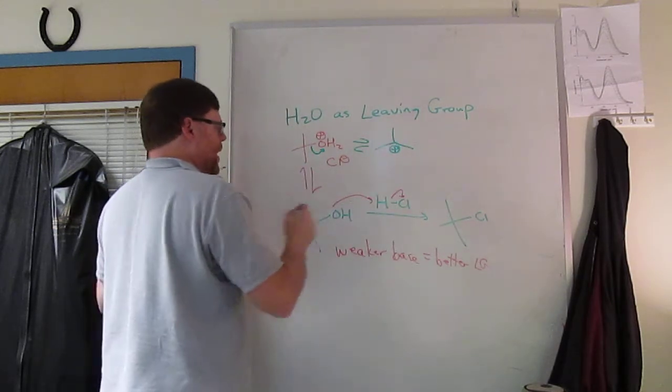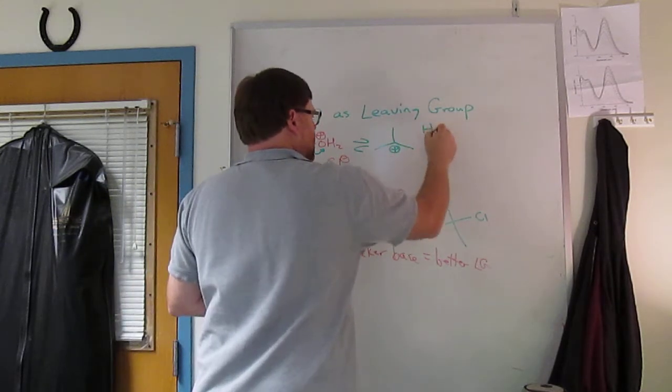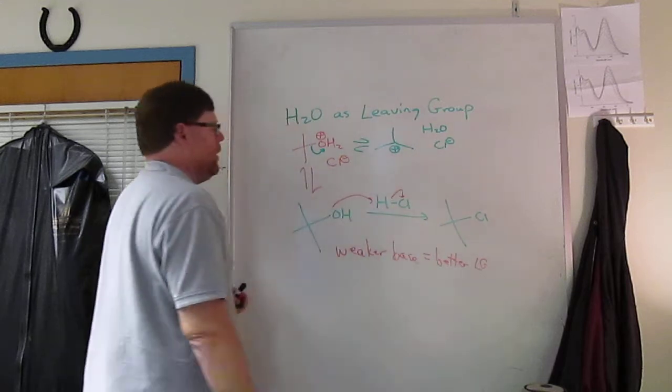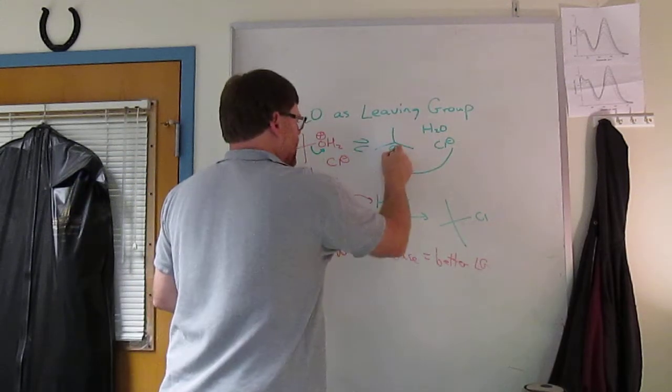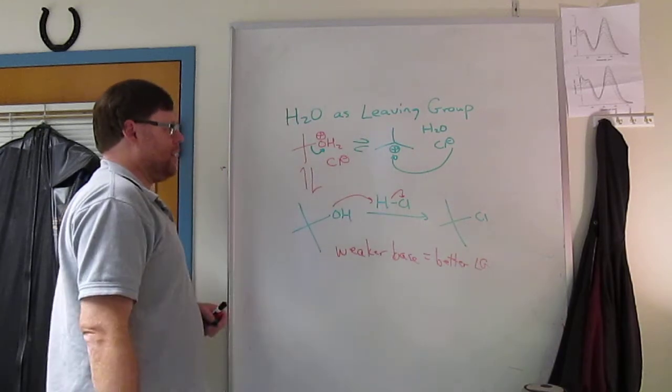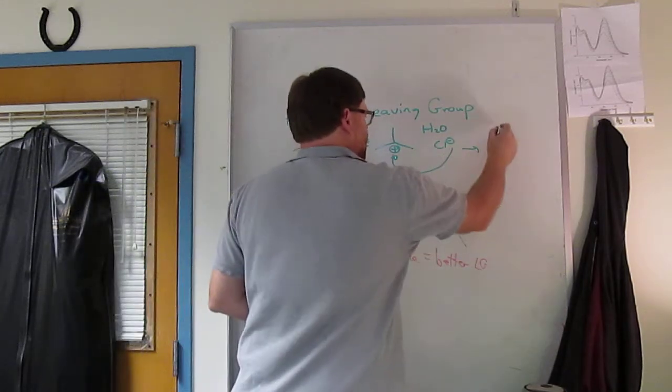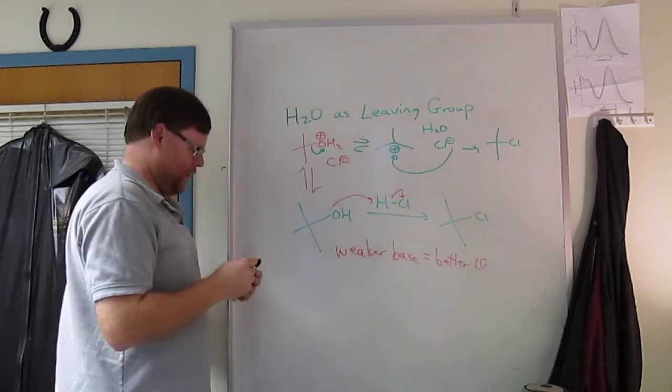Get a tertiary, get a t-butyl cation, plus water, plus chloride. And now this can do either E1 or SN1. The chloride can come in and attack that carbon and get our product. That was one of the products that we had.